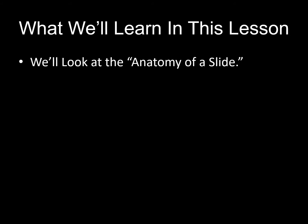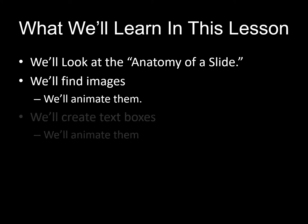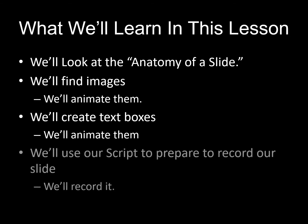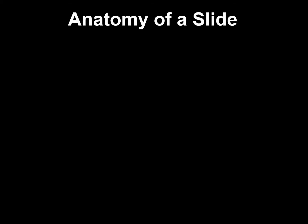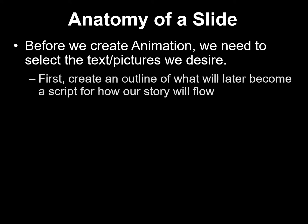Here's what we'll learn in this lesson. We'll look at what I call the anatomy of a slide. We'll find images and then we'll animate them. We'll also create text boxes and animate them as well. We'll use our script to prepare to record our slide and then we'll, of course, record it. Before we create animation, we need to select the text and pictures that we desire to use. First, we create an outline of what will later become a script for how our story will flow.